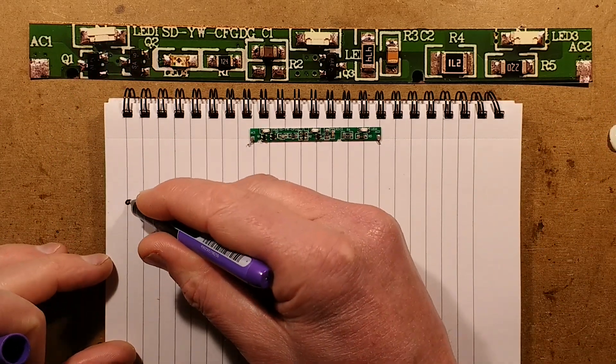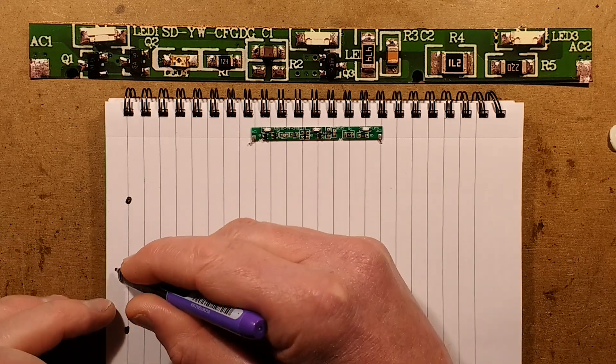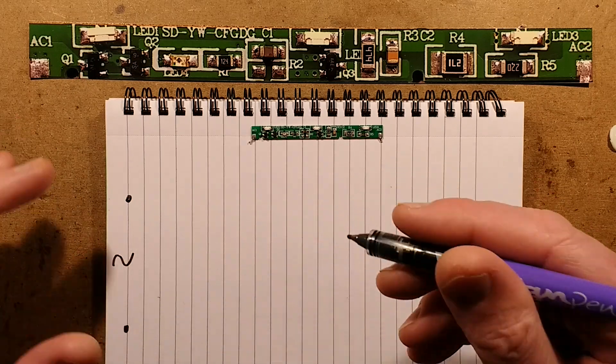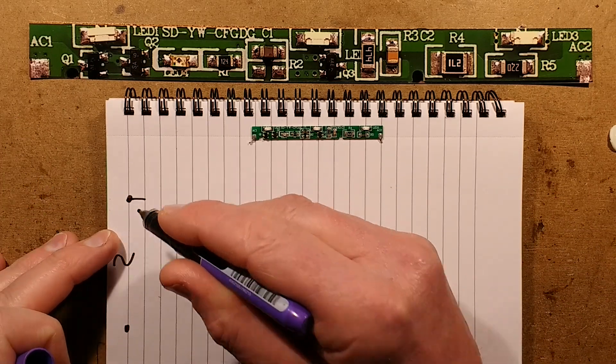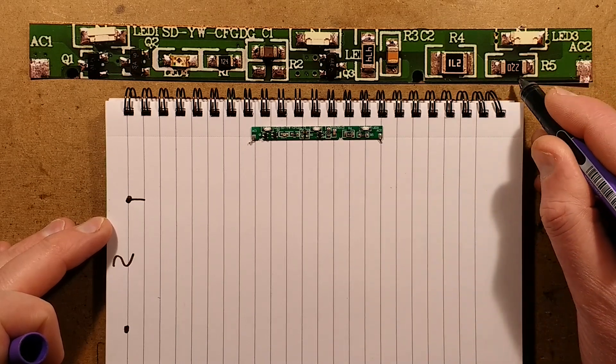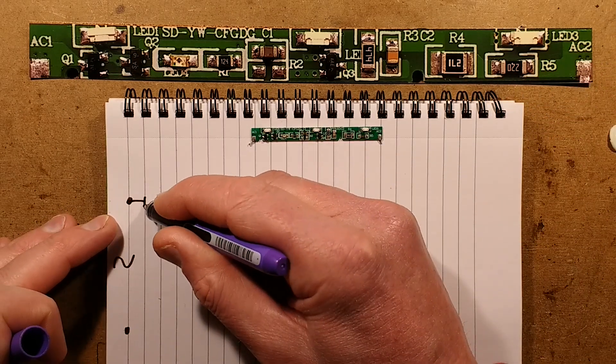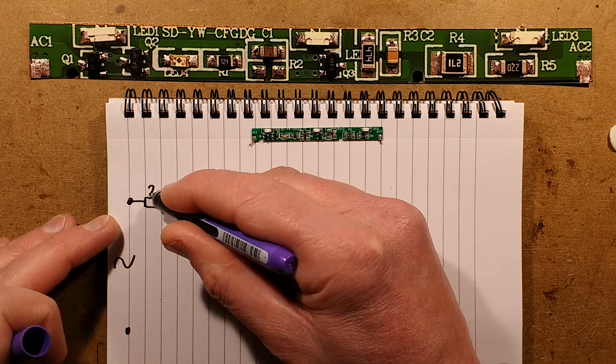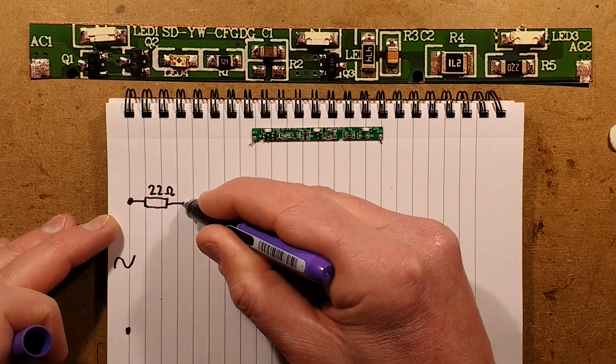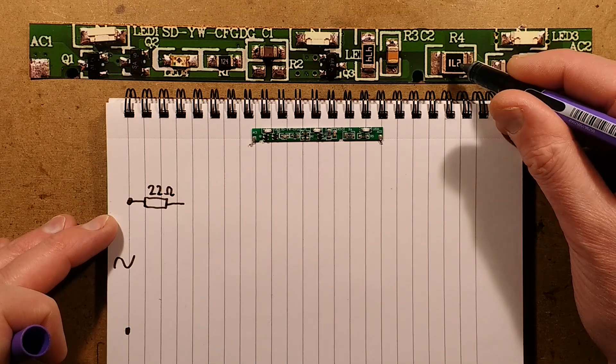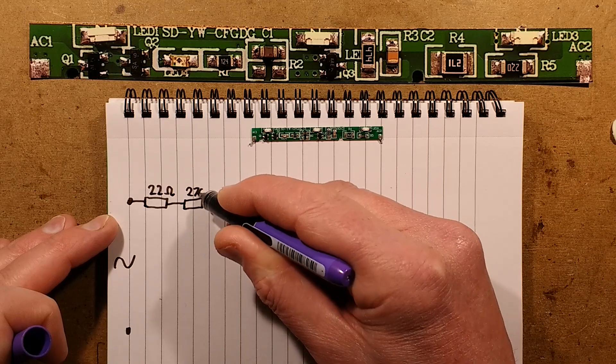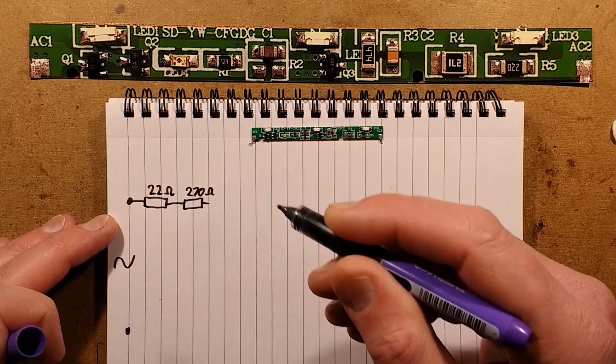We've got the mains coming in, the line supply from the wall. It comes in and rather oddly it goes through two resistors. The first one is 22 ohms. I'm guessing that might be effectively being used as a fuse, although it's immediately followed by a higher power rated 270 ohm resistor which will be limiting the inrush current to the circuit.